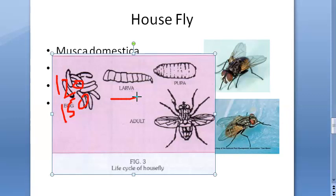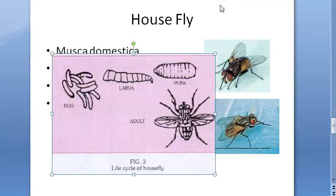The larvae or maggots measure one to two millimeters in length at birth. They are white, segmented, and footless. They eat voraciously and have a narrow anterior and a broad posterior. They molt twice, and the fully grown larva can be about 12 millimeters in length. These larvae don't like light - they burrow themselves into manure and similar material.